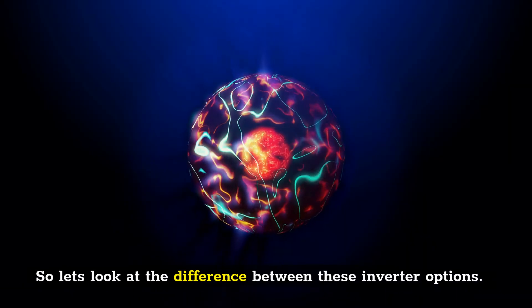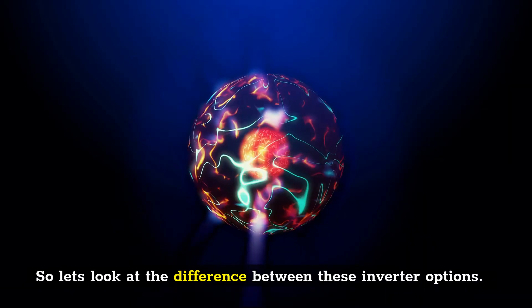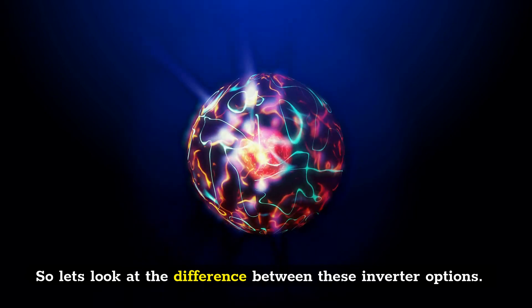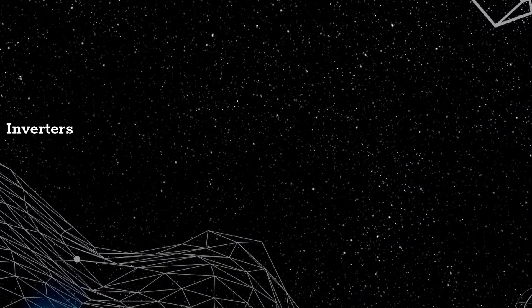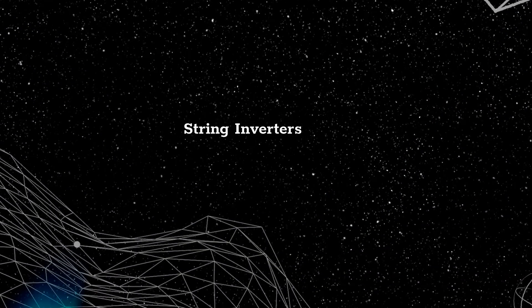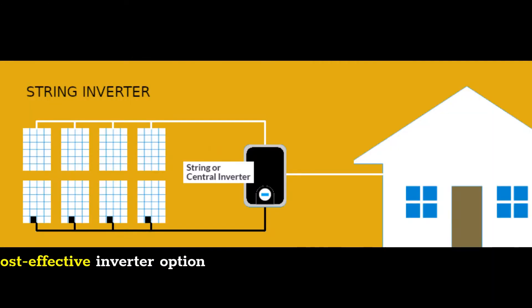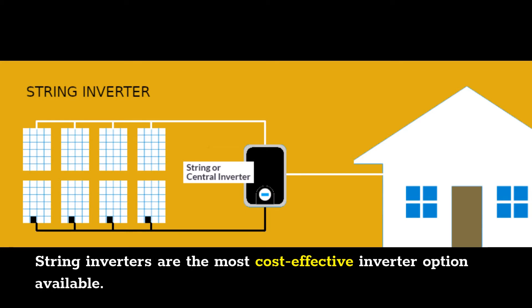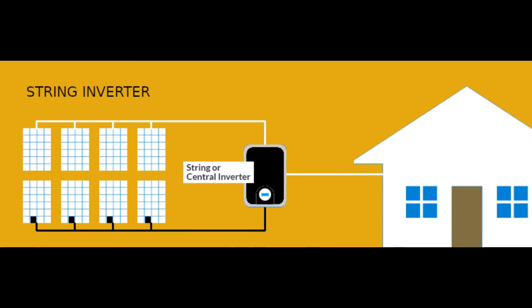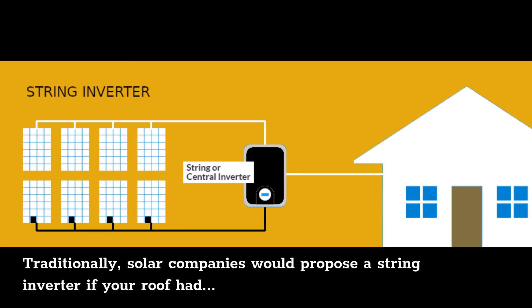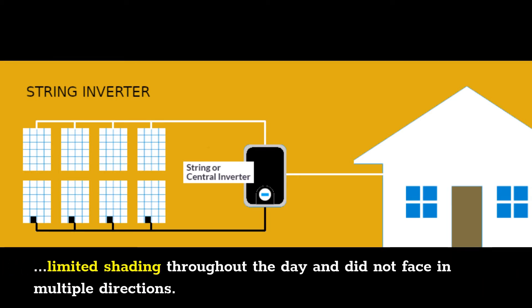So let's look at the differences between these inverter options. String Inverters are the most cost-effective inverter option available. Traditionally, solar companies would propose a string inverter if your roof had limited shading throughout the day and did not face in multiple directions.